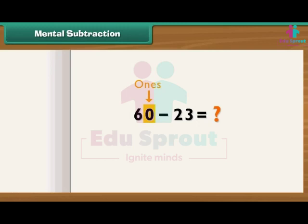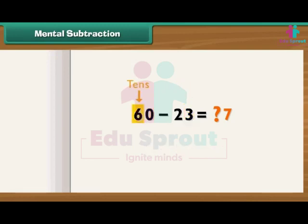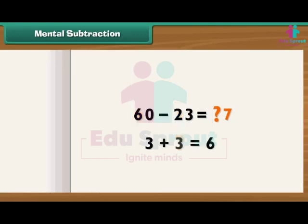For example, 60 minus 23: the ones place of 60 is 0, and the ones place of the first number is 3. We find what should be added to 3 to make 10 — the answer is 7. So the ones place of the answer is 7. For the tens place, the sum has 6 tens, we already have 2 tens, with 1 carried over. So 3 is added, giving tens place 3. Thus 60 minus 23 equals 37.